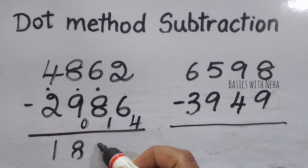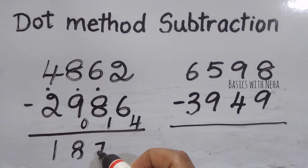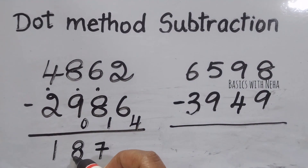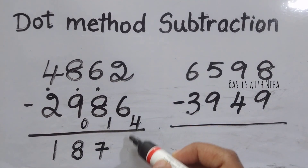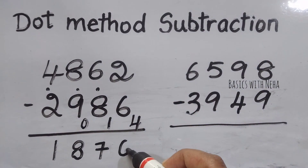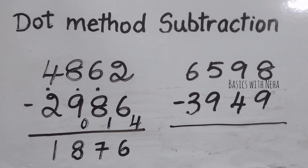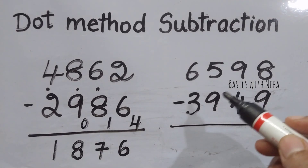6 plus 1 will give me 7, and 2 plus 4 will give me 6. That's my final answer: 1876.